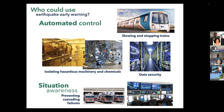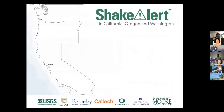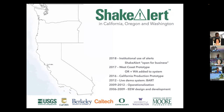Automated control is another major use of earthquake early warnings. BART trains automatically slow and stop based on the early warning system. Within industry, warnings can be used for isolating hazardous machinery and chemicals, data security, and situation awareness for emergency response and power utilities.